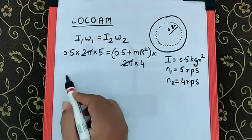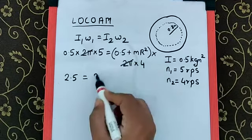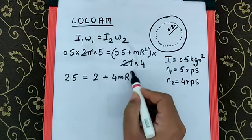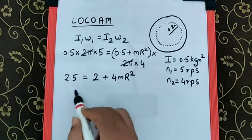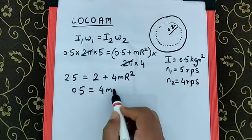0.5 into 5 becomes 2.5, which is equal to 4 into 0.5 is 2 plus 4m r square. Now, 2.5 minus 2 is 0.5, which is equal to 4m into,